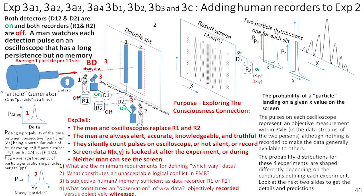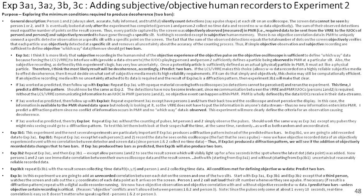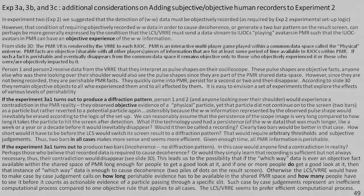What constitutes an unacceptable logical conflict in PMR? Is subjective human memory sufficient as a data recorder? What constitutes an observation of which-way data? Objectively recorded versus objectively witnessed. There's lots of discussion and further notes here — much to read if you want to get into the details. Three slides here just on the details of that one topic, so you can read that at leisure.